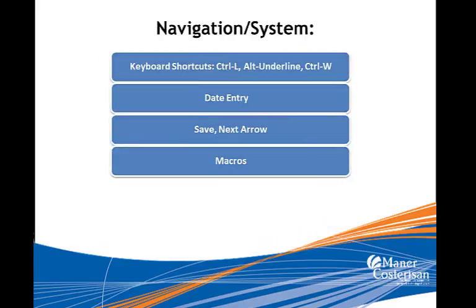I've got a few things that I want to show you that I call navigation or system-wide. We're going to show you some keyboard shortcuts: the Control L for lookup, the Alt+underline, the Control W for closing your screens. We're going to look at how to do some quick and easy date entry. I'm going to show you the save next arrow that takes you to the next record. And we're going to look at macros, which probably have 101 uses — the least used feature that has a lot of bang for the buck. So let's switch over to GP.